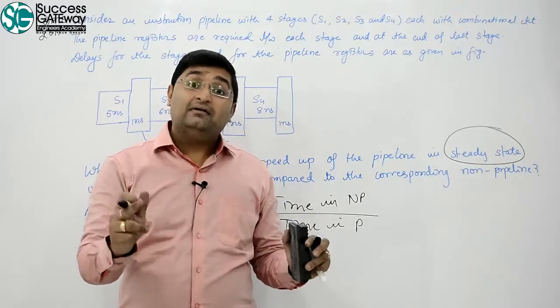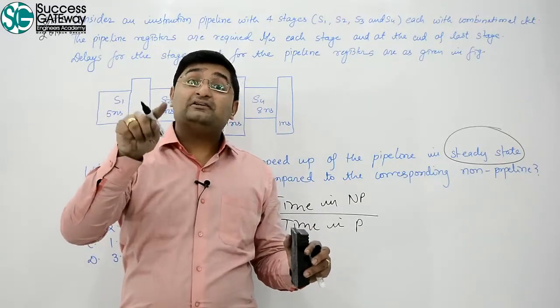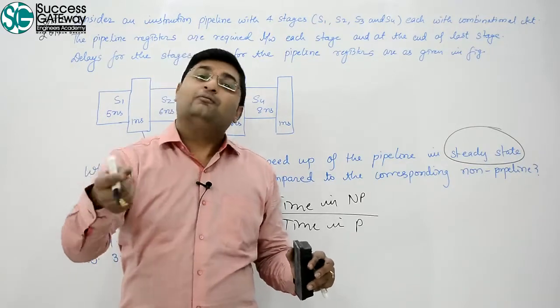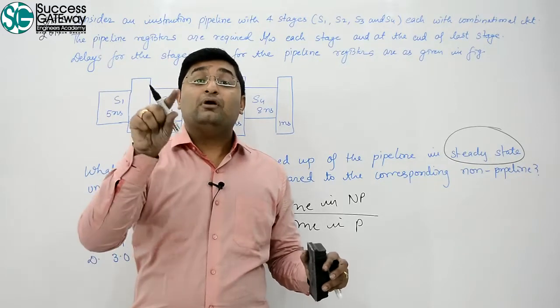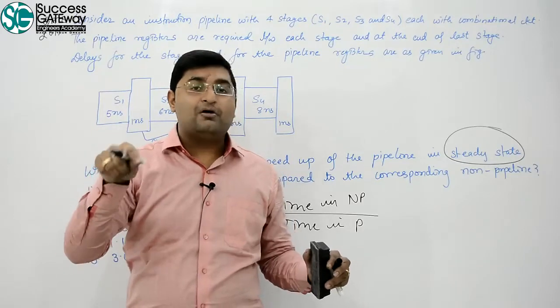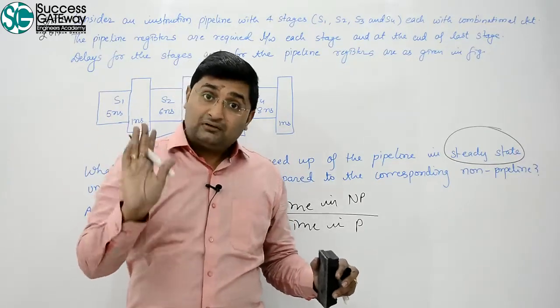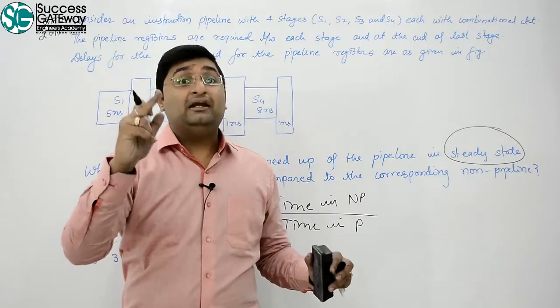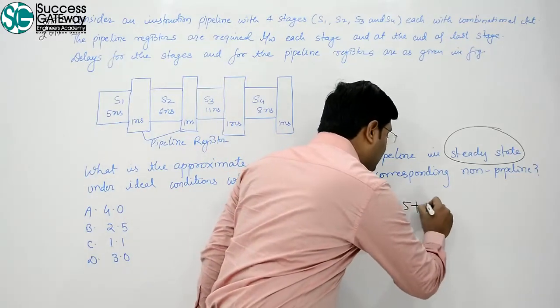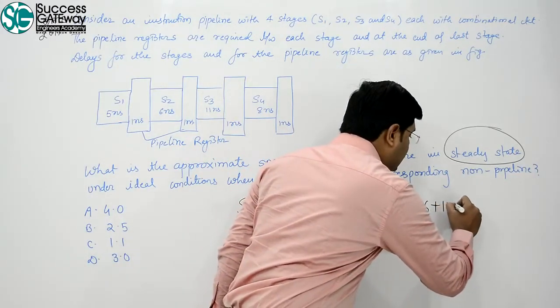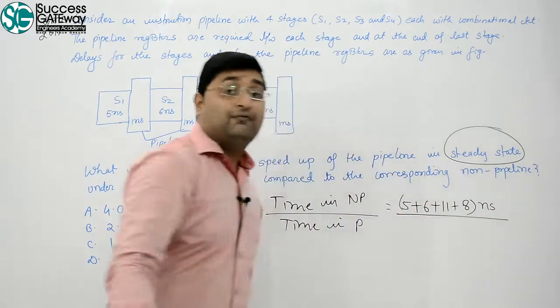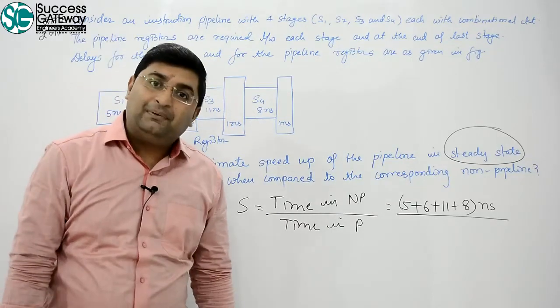Time it takes, right? And the inter-stage registers are not used in non-pipeline, they are used in pipelining to handle the data dependency. That is for forwarding only, clear? Now, how much time in non-pipeline? That is sum of the stages. That is 5 plus 6 plus 11 plus 8 nanosecond.